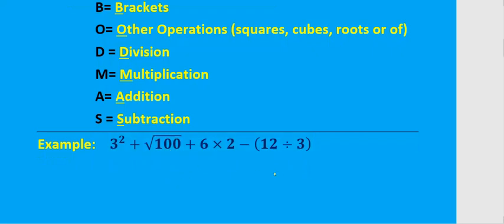According to BODMAS, if you need to simplify an expression, you get rid of the brackets first — deal with brackets before doing anything else. 12 divided by 3 is 4, so we can keep everything else the same and get rid of the brackets first.